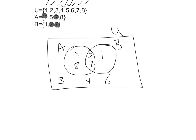And that is our completed question. So you can see the intersection was filled in first, then the rest of A, then the rest of B. And then I did a quick check of the universal set and I filled in everything that was not included in A or B.